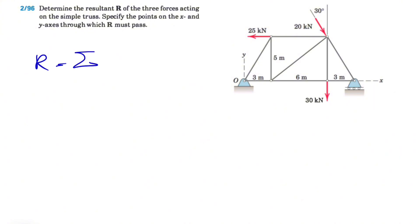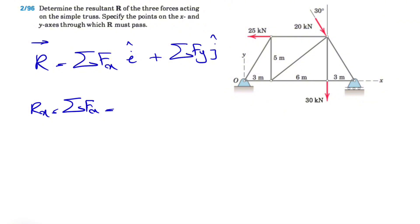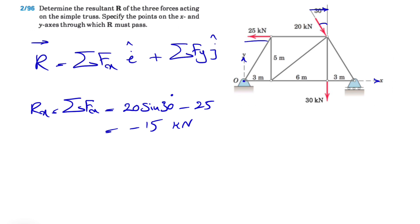R would be a vector with an x component. We have to find the sum of all forces in the x direction, which we can call Rx. We have the x component of the 20 kilonewton force — we know this angle is 30 degrees, so we have 20 times sine of 30 degrees. We also have the 25 kilonewton force, which is in the negative x direction. Sine of 30 is 0.5, so 20 divided by 2 is 10; 10 minus 25 gives us minus 15 kilonewtons. That's the x component of R.